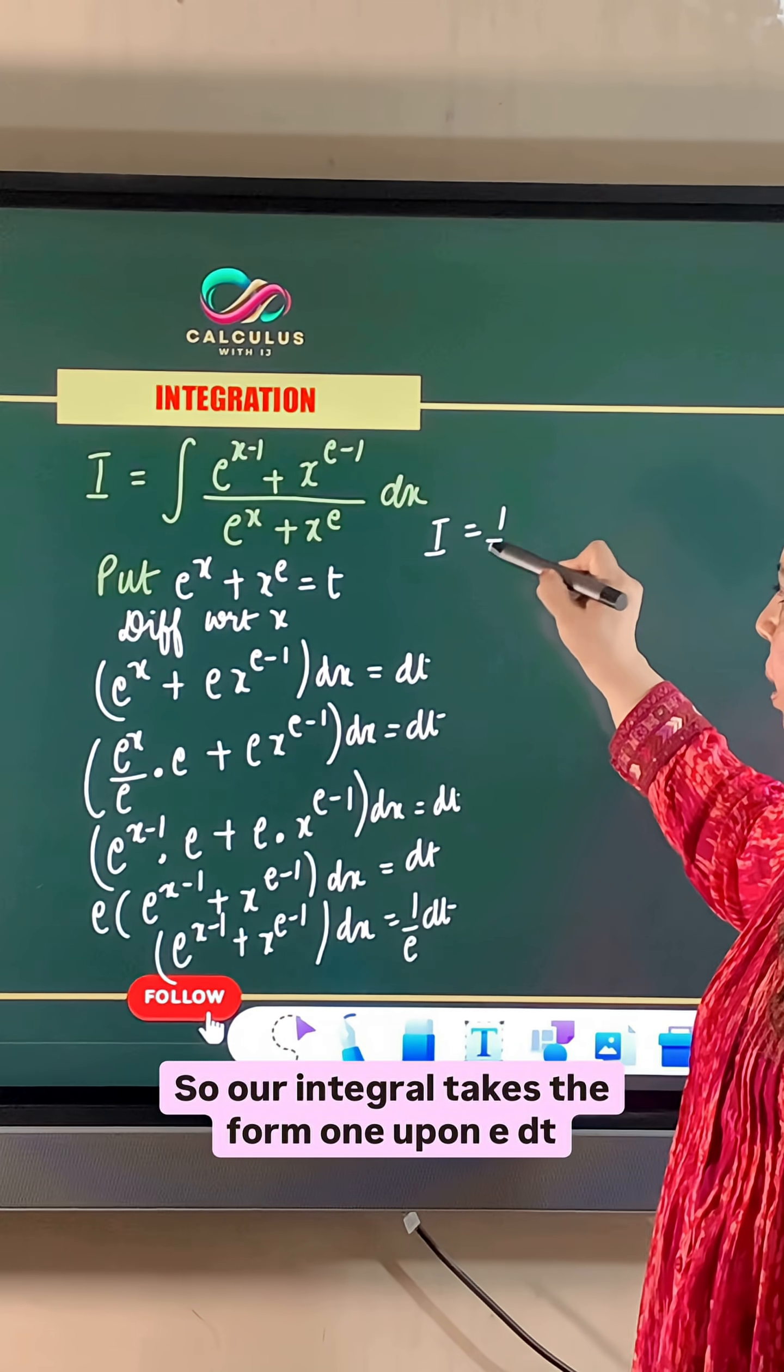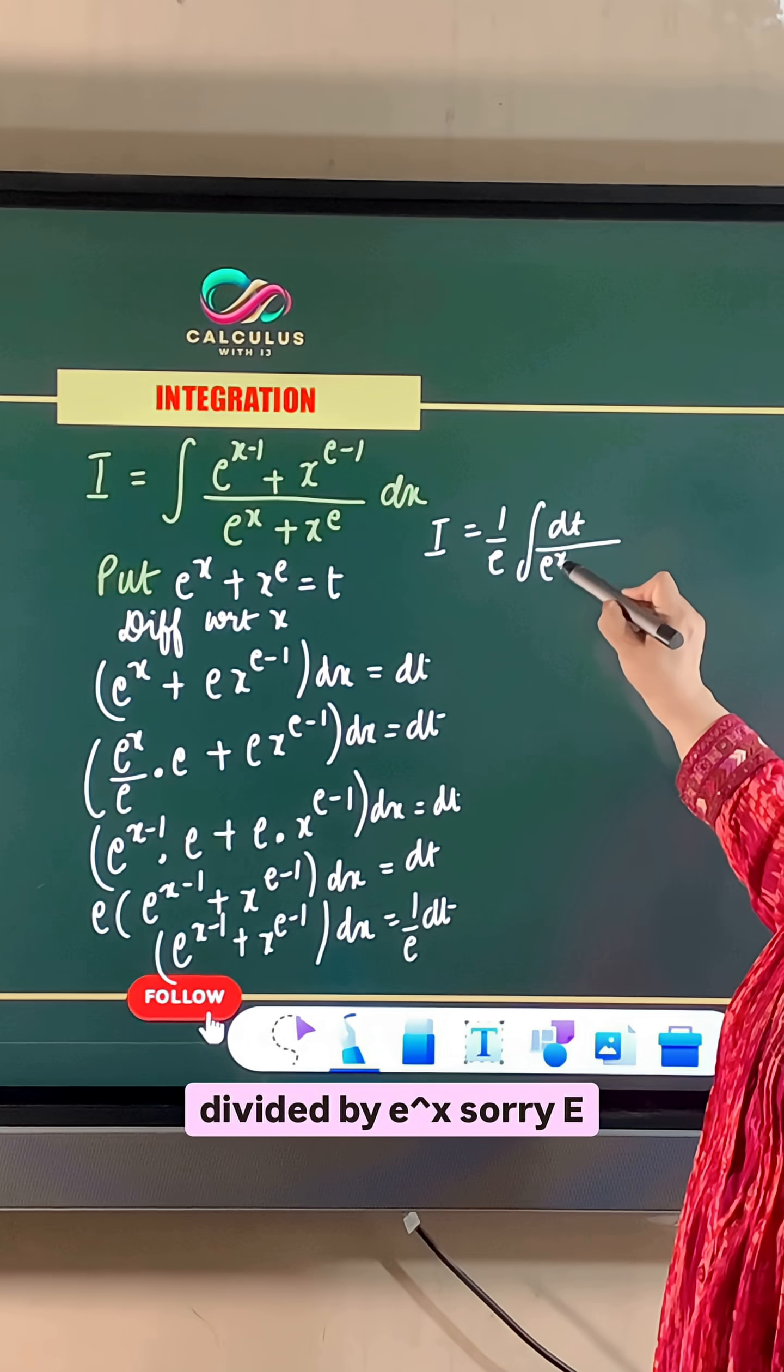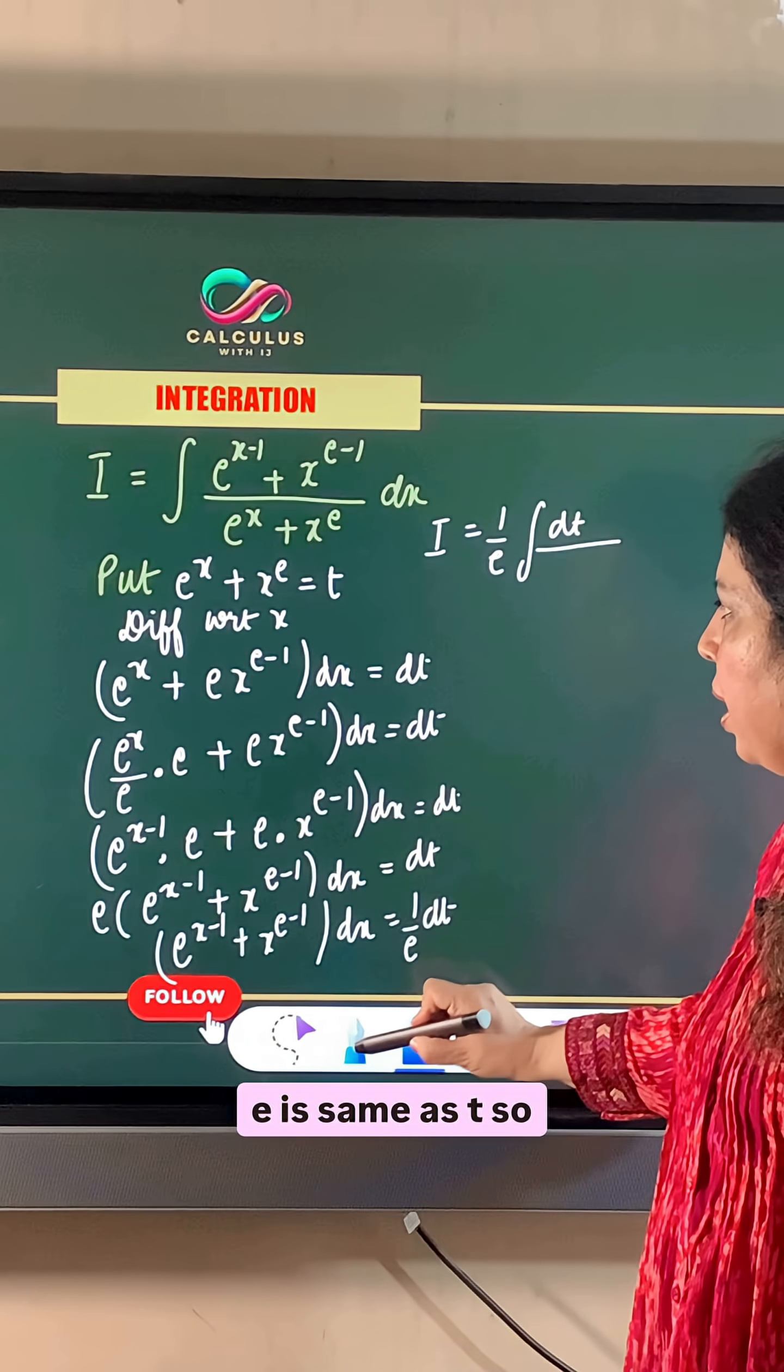So our integral is 1 upon e dt divided by e raised to power x plus x raised to power e, which is the same as t.